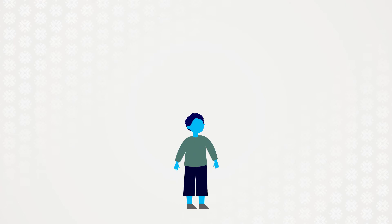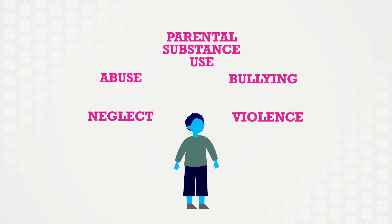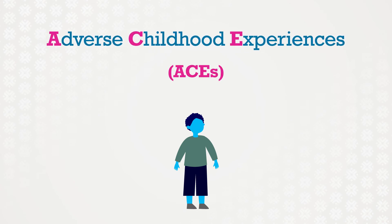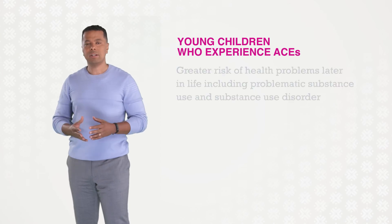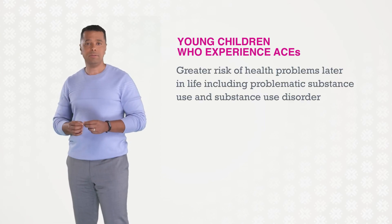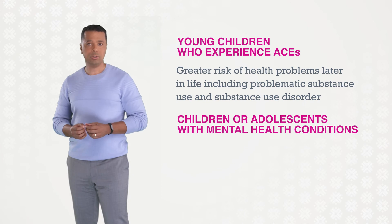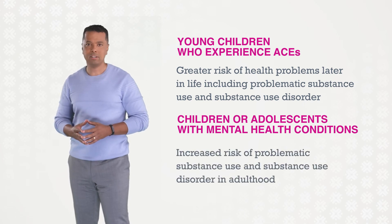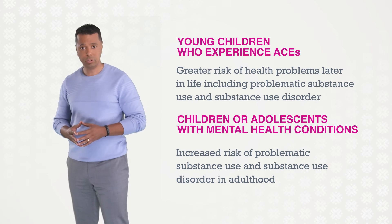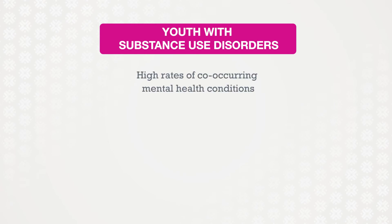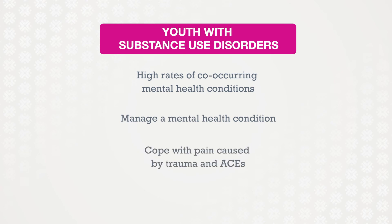Examples of trauma and toxic stress include neglect, abuse, parental substance use, and bullying or violence. When they occur before the age of 18, these events are called adverse childhood experiences, or ACEs. Young children who experience ACEs are at greater risk for developing health problems later in life, including problematic substance use or substance use disorder. Having a mental health condition in childhood or adolescence can also increase the risk, and research suggests that youth with substance use disorders also have high rates of co-occurring mental health conditions. Youth may use substances to manage a mental health condition or to cope with pain caused by trauma and ACEs.